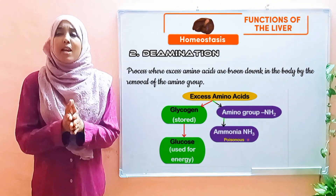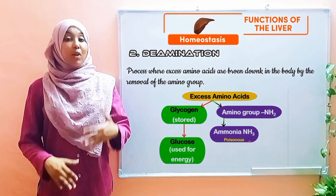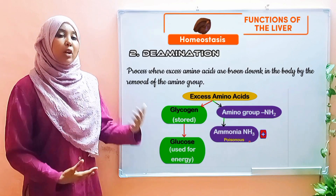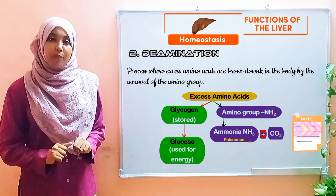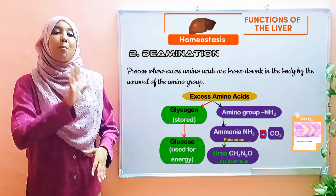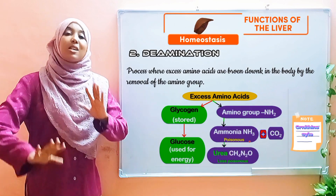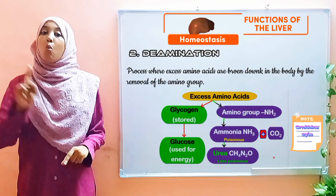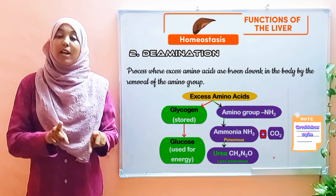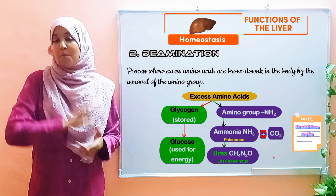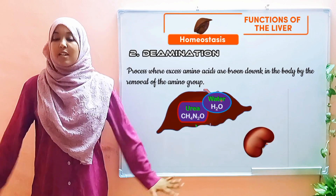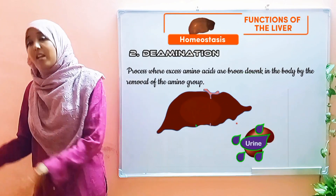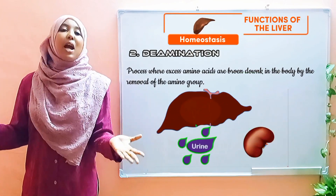The first step in deamination is removal of the amino group. This leads to the formation of a compound called ammonia. Now ammonia is very, very toxic, so it needs to be converted to something less toxic. Ammonia undergoes a series of chemical reactions called the ornithine cycle. In this cycle, ammonia is reacted with carbon dioxide, leading to the formation of urea. Urea is our waste product — it's less toxic than ammonia. Urea is then released into the bloodstream, transported to the kidneys, and excreted in the form of urine. And there we have it: deamination.